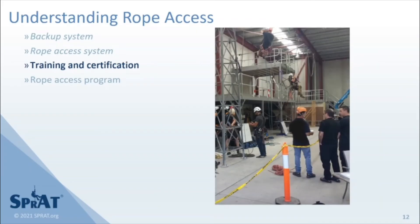Becoming proficient in the application of rope access systems is an undertaking that requires competent training and mentorship. Training is the solution for proper implementation of fall protection and rope access systems and for preventing foreseeable misuse of equipment. While consensus standards assist in this process, there is no substitution for the knowledge of the worker verified via a consistent set of performance-based criteria.